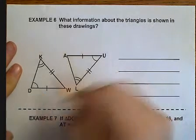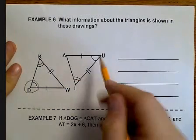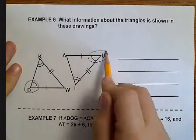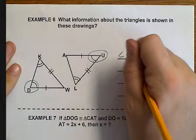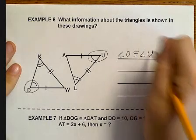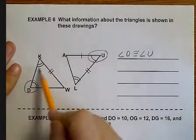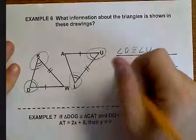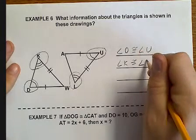Well, let's see. I've got a single arc on angle D. I've got a single arc on angle U. So, I can say that angle D is congruent to angle U. Because they both have the single marks.